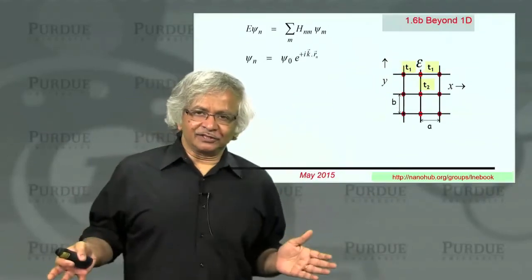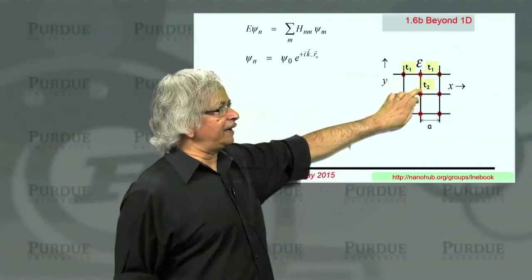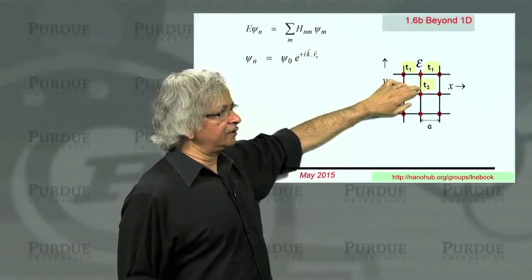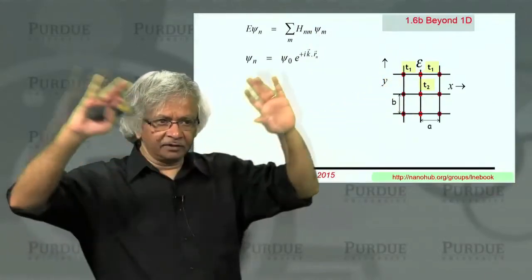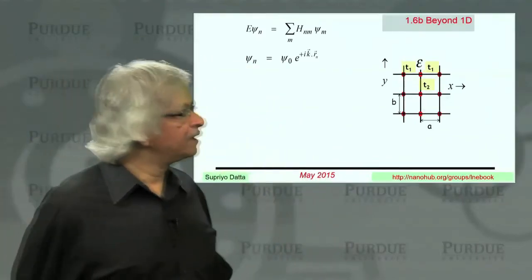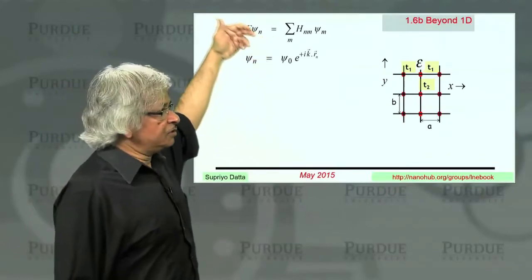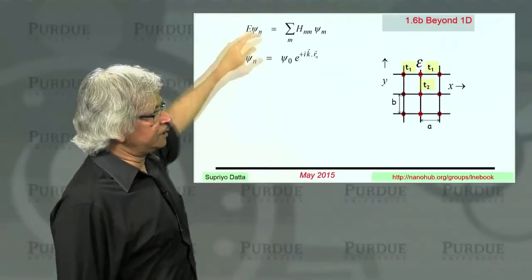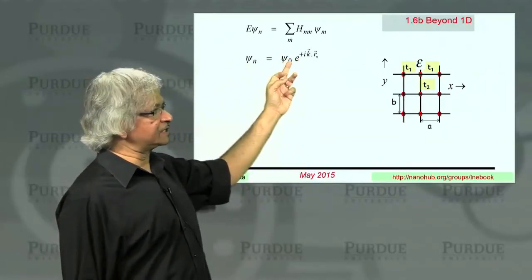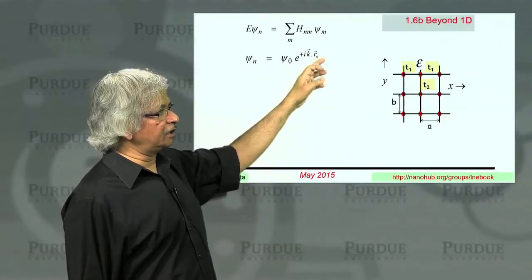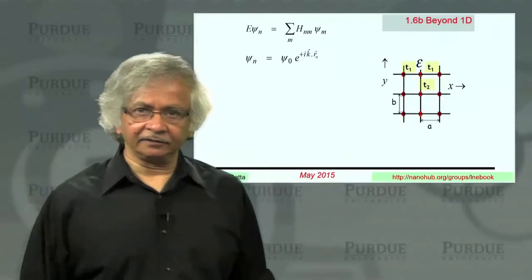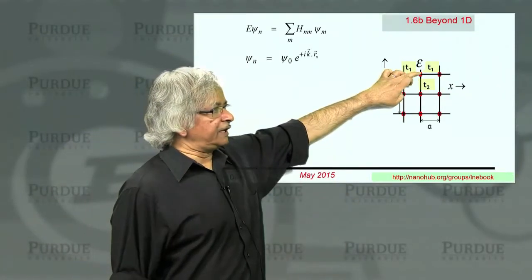Now, again, because of the periodicity of the solid, the fact that you could go to any point n, and the matrix structure would look exactly the same. Whether you stand here, whether you stand there, it doesn't matter. It's a uniform solid. You can stand anywhere. You wouldn't know the difference. They all look the same. As long as that property is true, the solutions to that equation can be written, again, in this form of plane waves that we talked about. Psi n equals psi 0, e to the power i k dot r n, where r n is this location of the n-th atom.